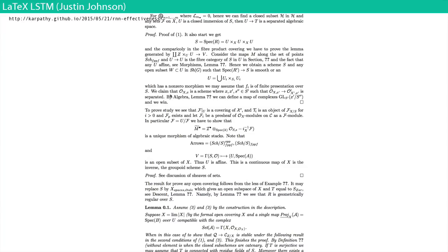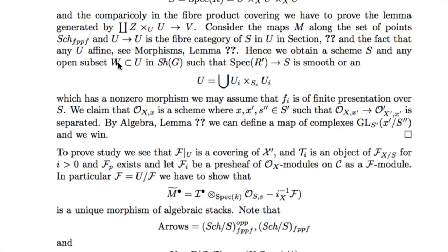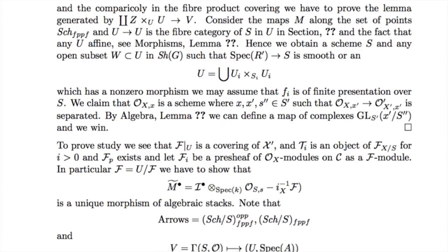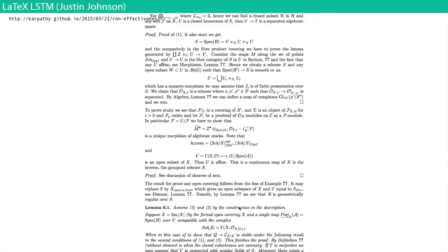This one is made by Justin Johnson in the same lab — they trained it on LaTeX, the format for generating math. So when you create equations in math papers, it's just text with a markup language. You can produce fake math — if you read it, it looks like a math paper but doesn't make any sense at all. It's trained on algebraic geometry or topology papers. It's described as 'a unique morphism of algebraic stacks' and so on — the equations don't actually make sense, but it looks like math.